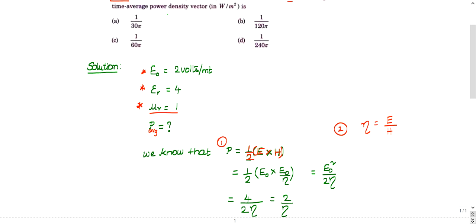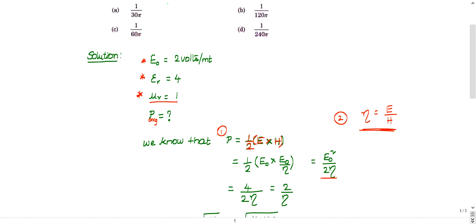If you know these two formulas, you can solve this question. Half into E into E₀. I am taking the magnitude. E₀ maximum value into what is H from the second relation? H is nothing but E by η. E₀ by η is replaced. Finally, you are getting time average power as E² by 2η.